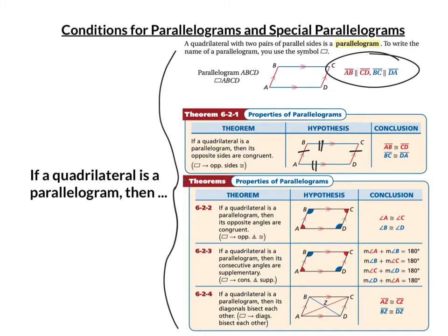Same side interior angles are supplementary, so any two consecutive angles you pick, like A and B, or A and D, add to 180. We also know that the diagonals bisect each other — in this case, BZ equals ZD and AZ equals ZC. You need to memorize these properties: opposite sides parallel, opposite sides congruent, opposite angles congruent, consecutive angles supplementary, and diagonals bisect each other.